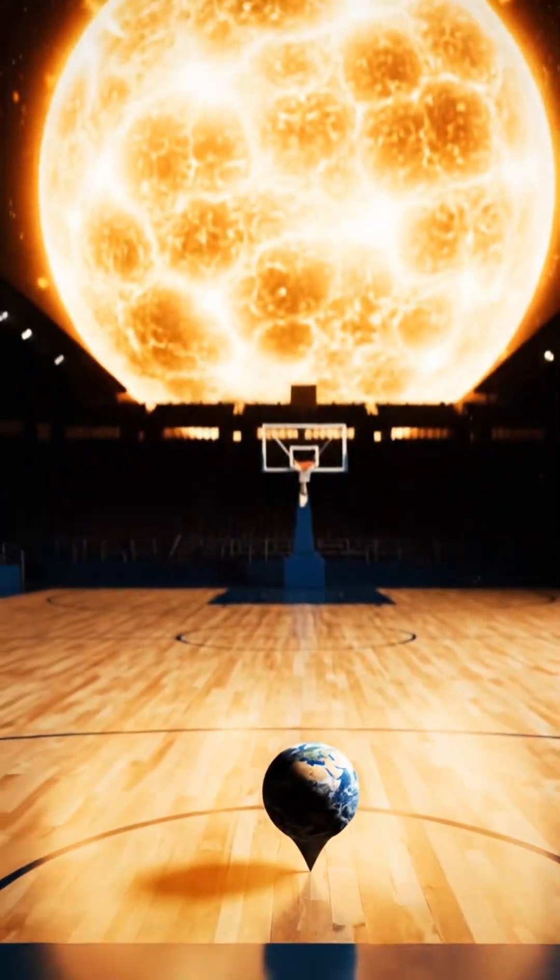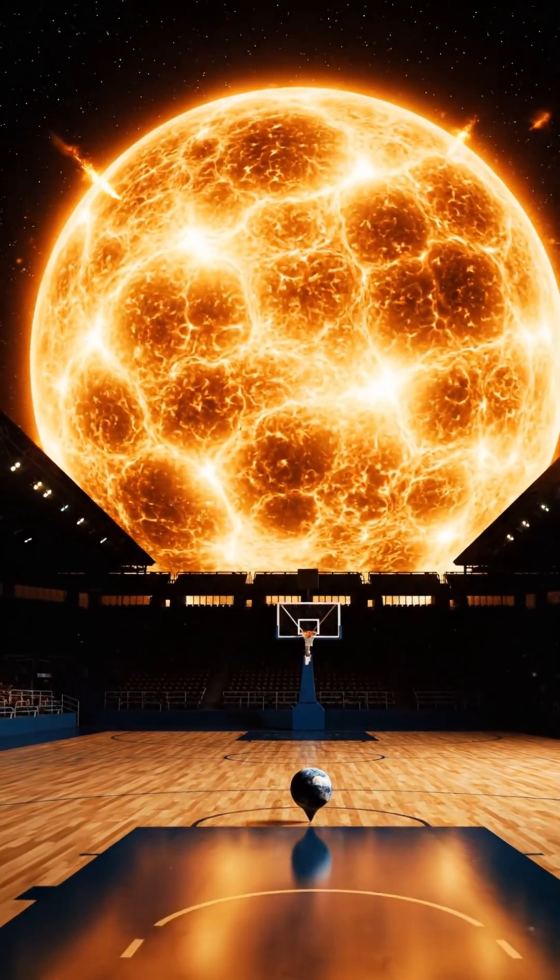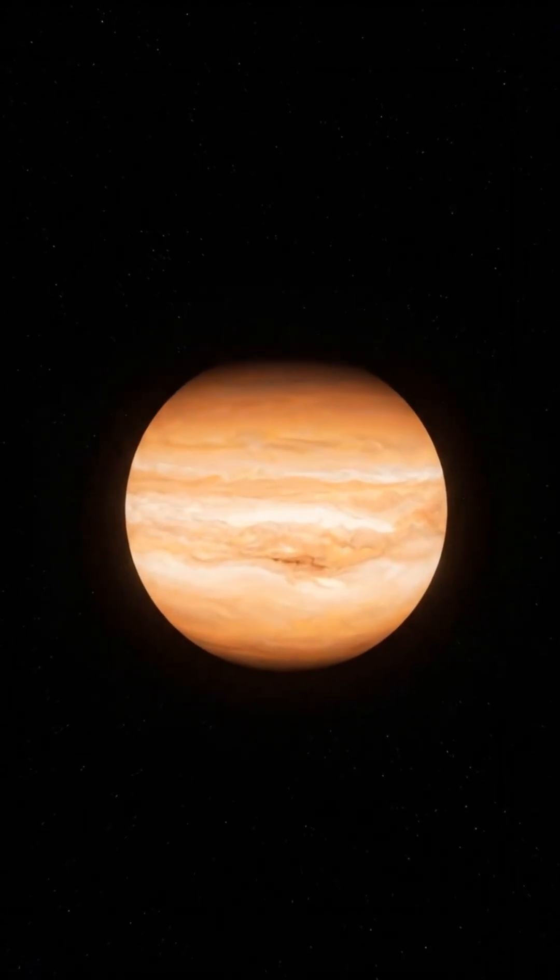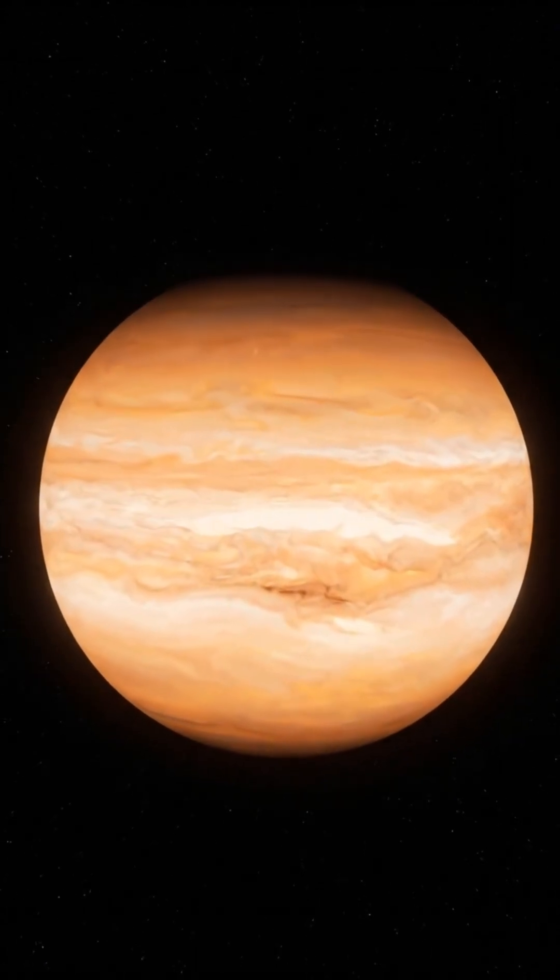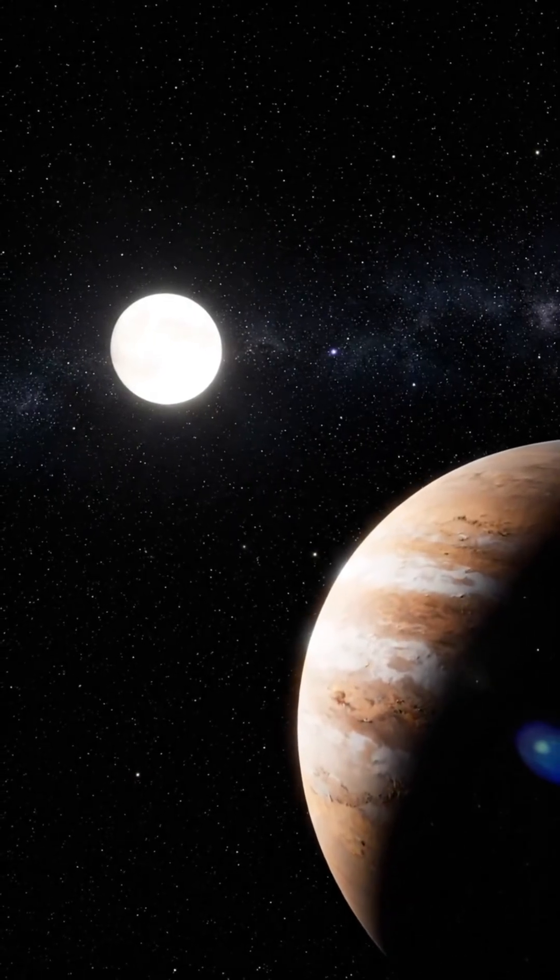The gas giants push the boundaries even further. Jupiter, the largest planet, would be the size of a gumball—2.4 centimeters—located about 140 meters away, or 1.5 football fields from your basketball sun.